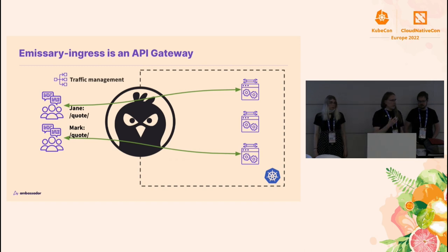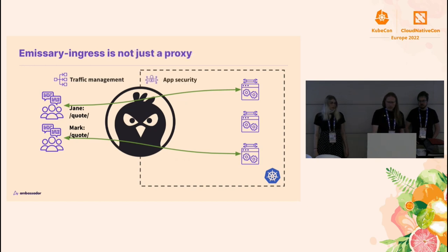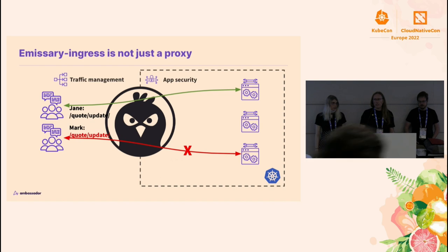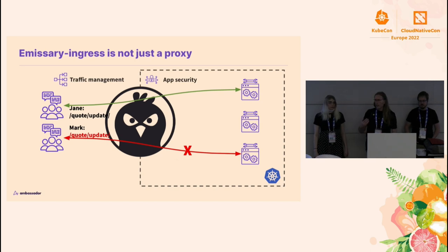API gateways, in addition to being proxies, are a really good place to bring together more centralized functions that you really don't want your developers to have to worry about individually. For example, application security — maybe Jane is allowed to update quotes, but Mark is not. You can centralize that in the API gateway, let it worry about auth for you, and then your developers can just rely on that.